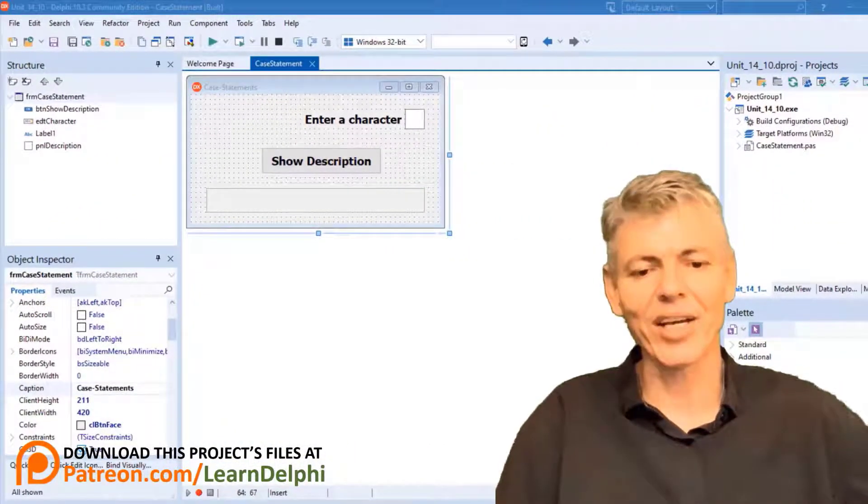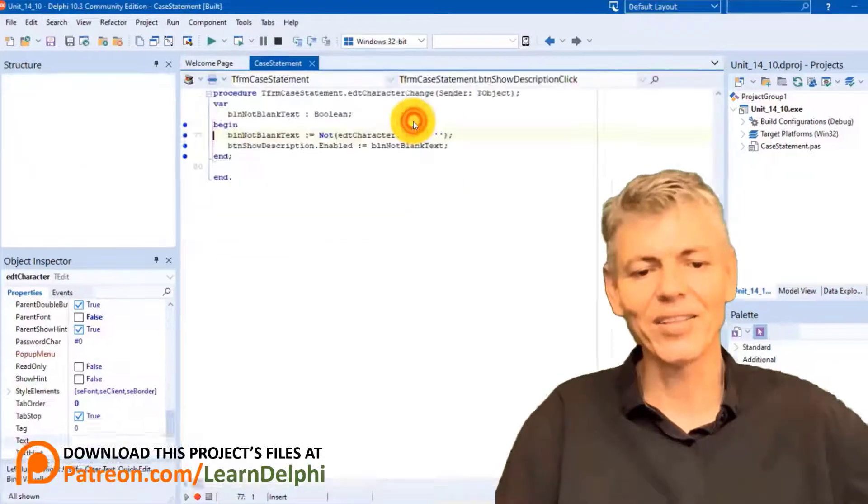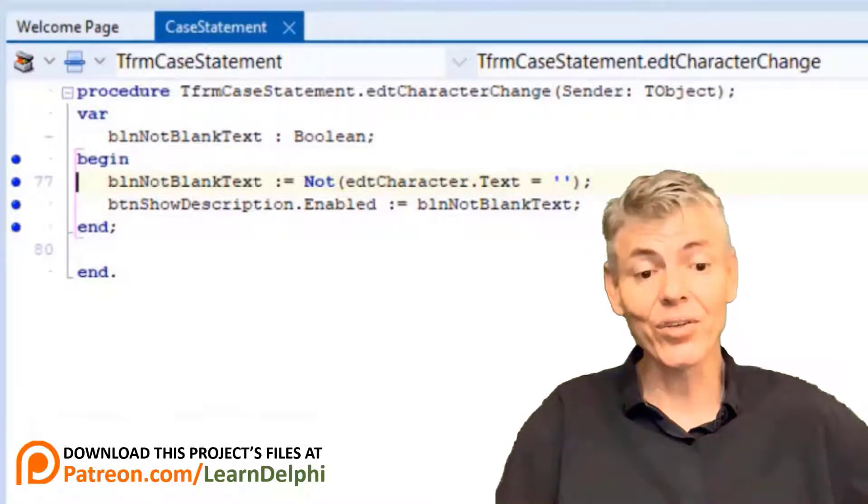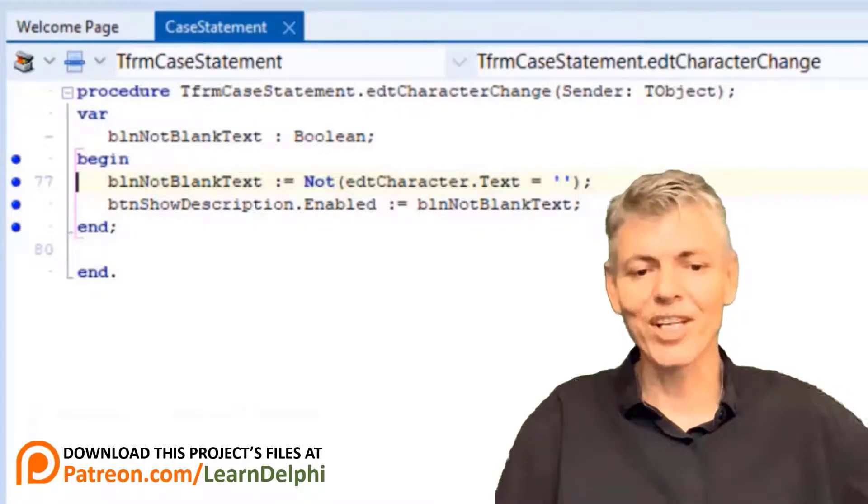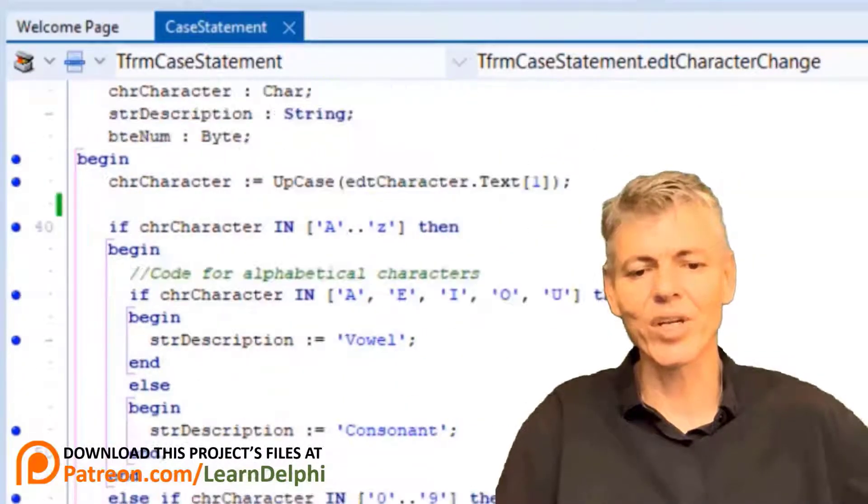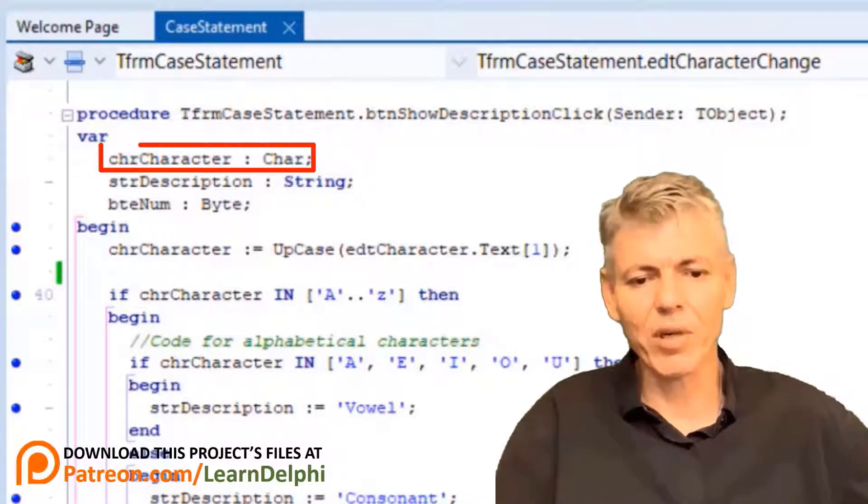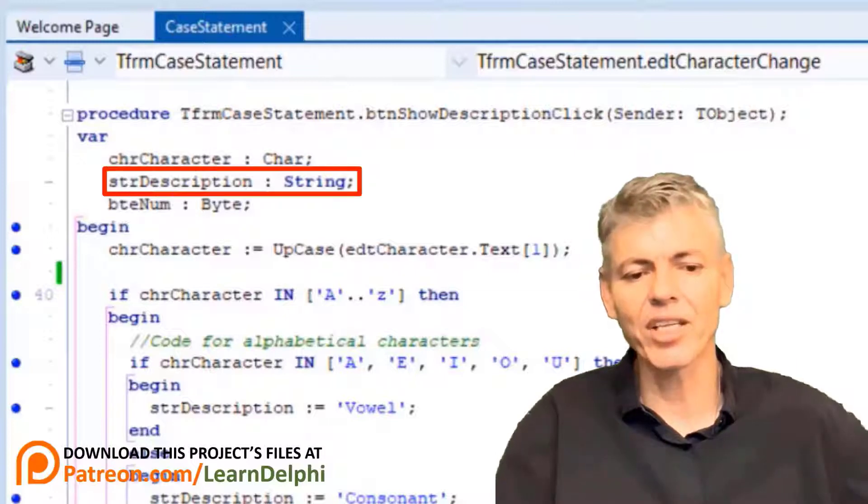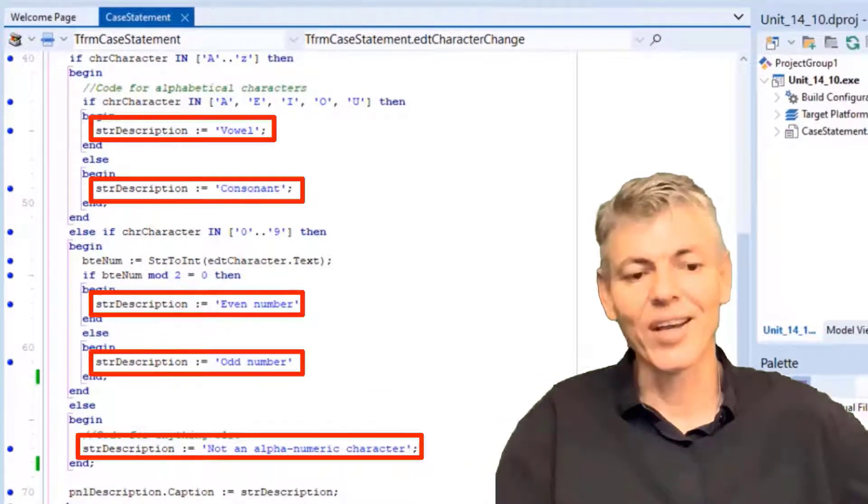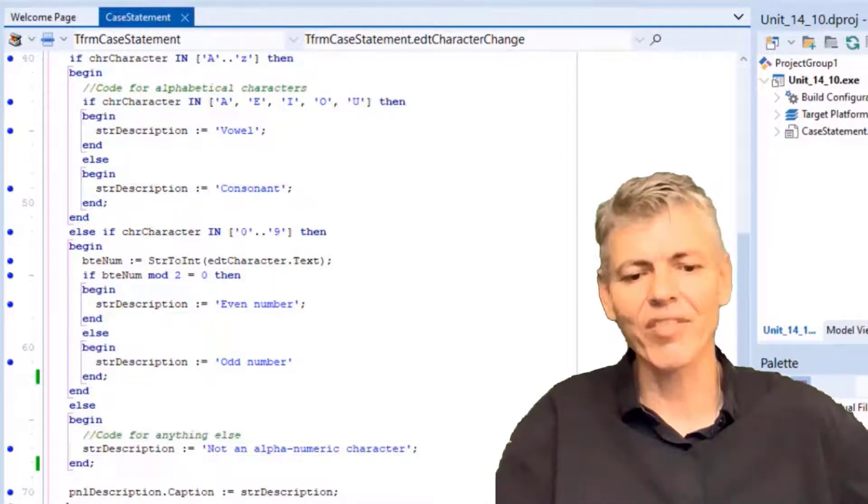This is the project in my Delphi IDE. Double click the edit. Here we already have the code that checks if the edit is blank or not. And based on that, the enabled property of the button is set. I'm just going to do a quick overview of the code we did last time. But if you want a detailed lesson, I recommend watching the previous video. If you scroll up, you will see the code that executes when you click the button. We have this char variable for the character in the edit named chrCharacter, and the string variable named strDescription that stores the description of the character. The description is assigned by if branches here, and the result is assigned to the caption of the panel here at the bottom.